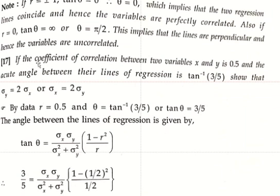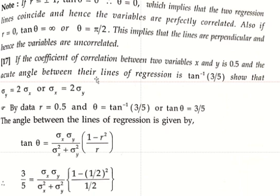Next problem. If the coefficient of correlation between two variables x and y is 0.5, and the acute angle between their lines of regression is tan inverse of 3 by 5, show that sigma y equals 2 into sigma x, or sigma x equals 2 into sigma y. By data, r equals 0.5, and theta equals tan inverse of 3 by 5.